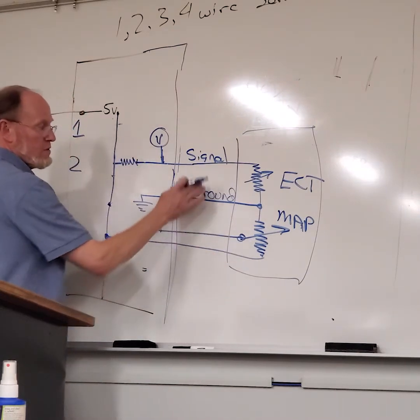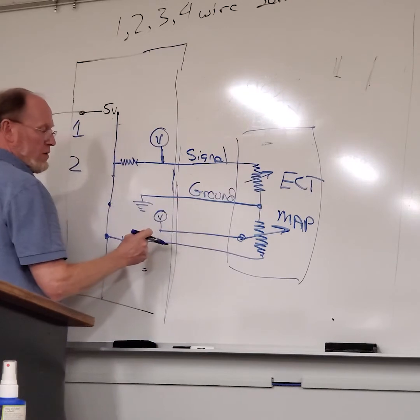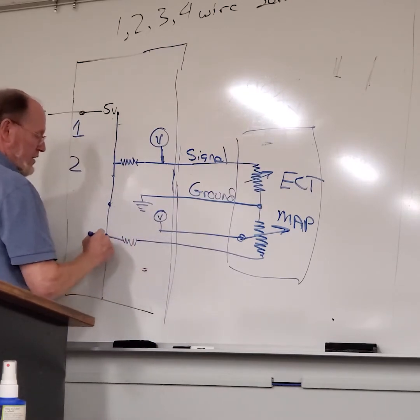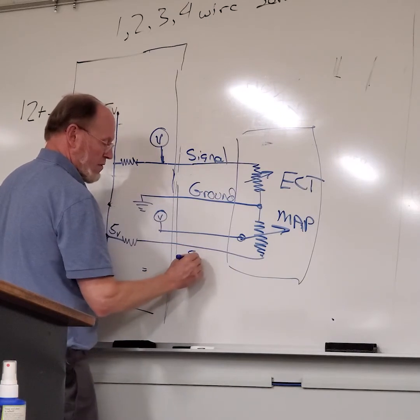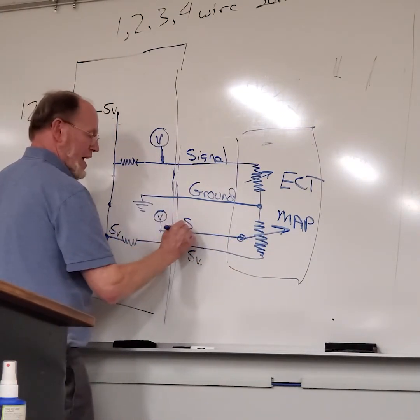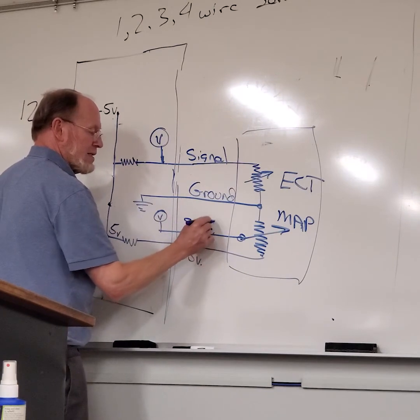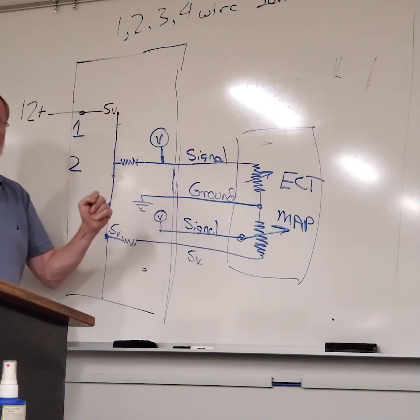So, 4 wires: your signal, your ground for your 2-wire sensor, your 5-volt sensor feed, your signal wire which is the signal back, and your ground. There's your 4 wires. That's a 1-wire, 2-wire, 3-wire, and 4-wire sensor.